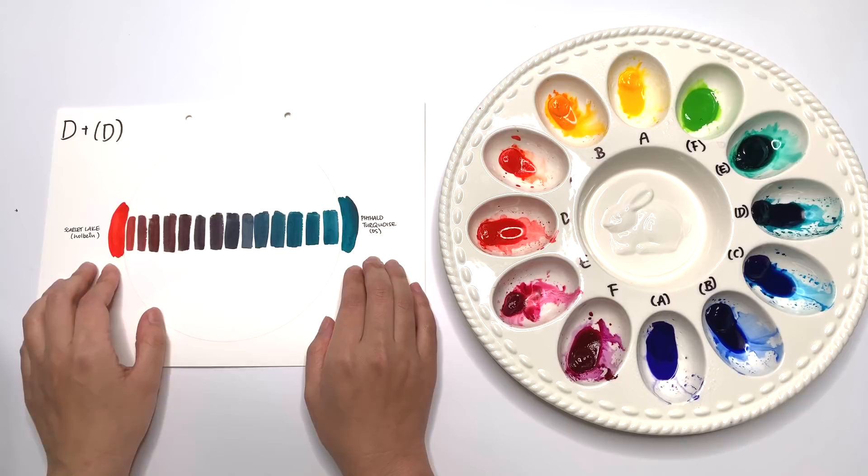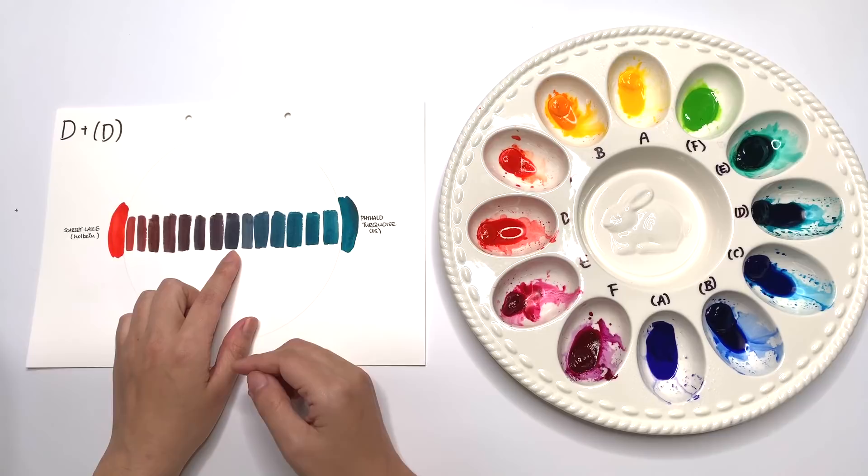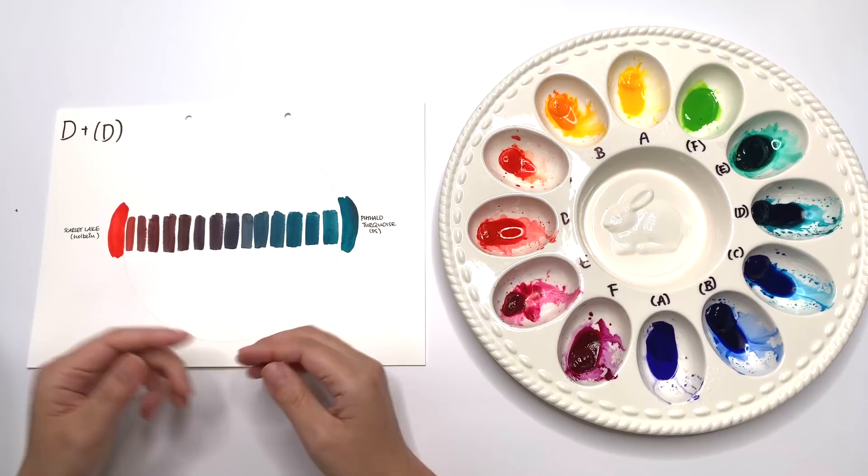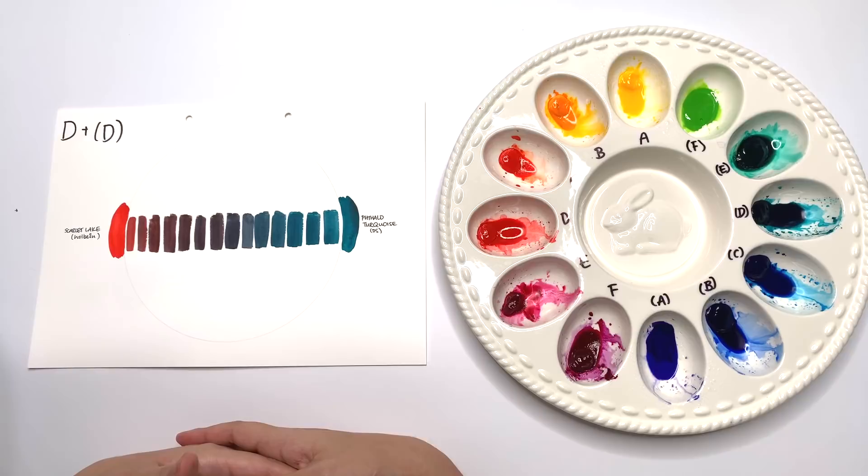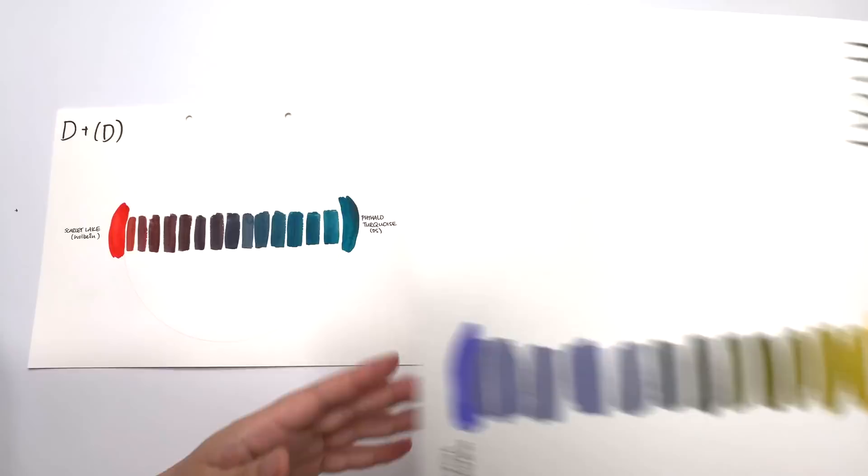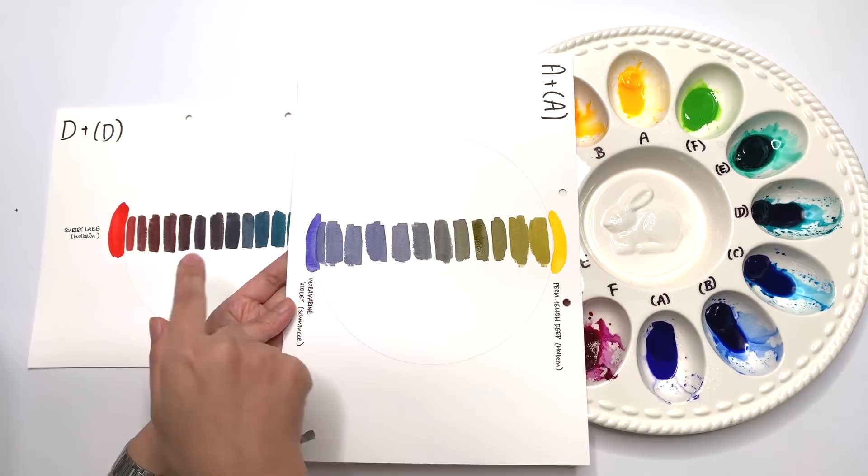Then the D pair which is the scarlet lake and the phthalo turquoise. With the different pairs, you get different kinds of greys and this provides you with the strongest, darkest muted color and that's because these two have the highest tinting strength. They are such strong colors that when you create its muted color it's really nice and strong. In comparison, this is the A pair that we just did and you can really see the difference in value. This is much darker muted color than this one.